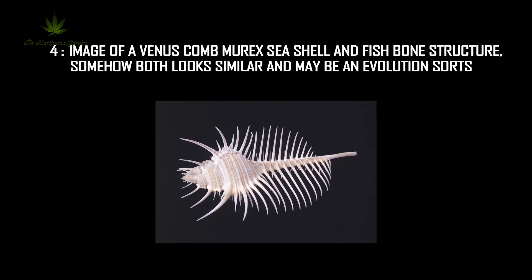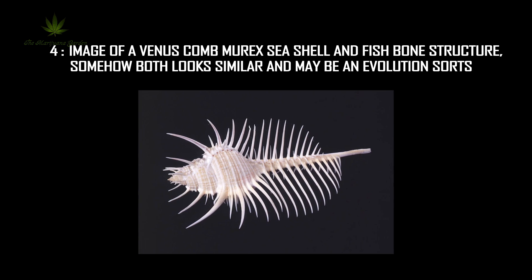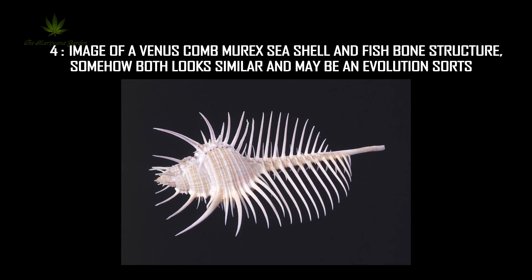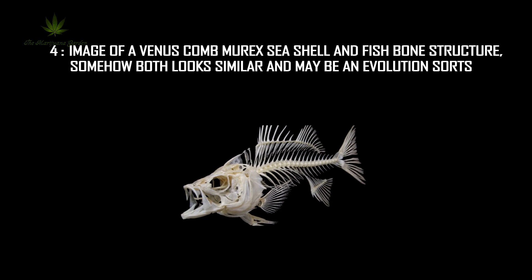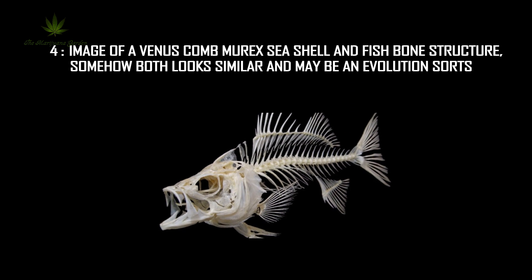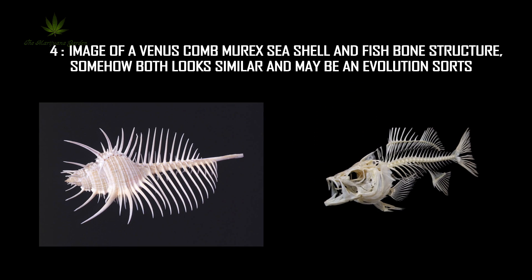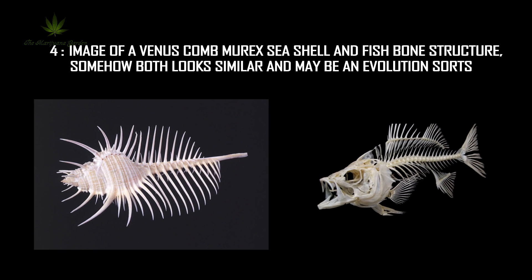Number 4: the image of a Venus murex seashell and a fish bone structure — somehow both look similar, and may be an evolution of sorts.